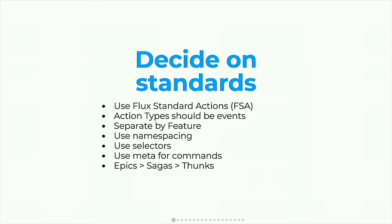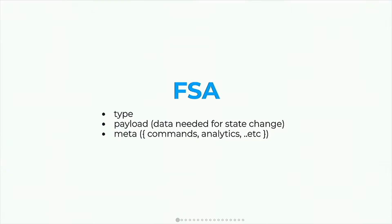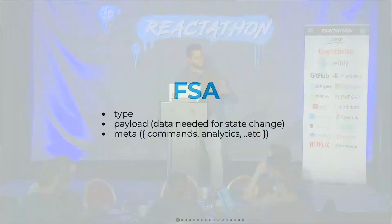And the last thing I want to talk about very briefly is epics, sagas, and thunks for business logic and side effects, which is very important. So flux standard action — very simple. There are three properties of a Redux action: the type, which is the only one that is required and describes an action that happens in your app; the payload, which is any data needed to change state in your Redux app for that specific action; and then there's meta. The meta is something where you can put kind of anything you want, and I've found that using meta for commands is the best way to use it, with very few exceptions.